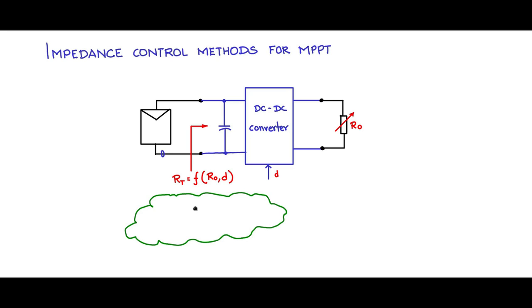For that you need two sensed inputs. One is the current, the photovoltaic module current that is flowing through the photovoltaic panel. The other is the voltage across the array panel or the array.